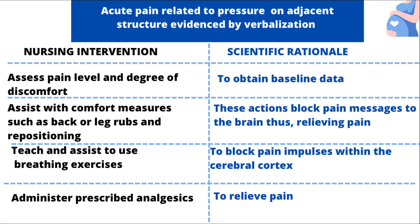Next, assist with comfort measures such as back or leg rubs and repositioning the patient. The rationale is that these actions block pain messages to the brain and relieve pain. The next intervention is to teach and assist her to use breathing exercises. Breathing exercises help to block pain impulses within the cerebral cortex. Lastly, administer prescribed analgesics, and the rationale is to relieve pain.